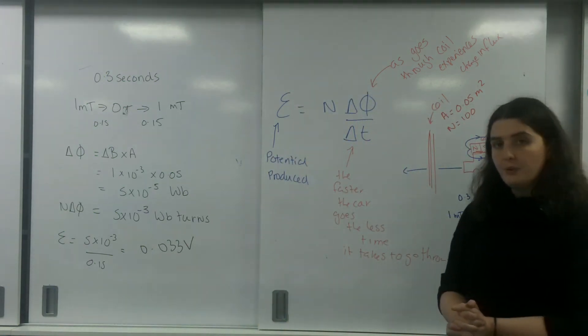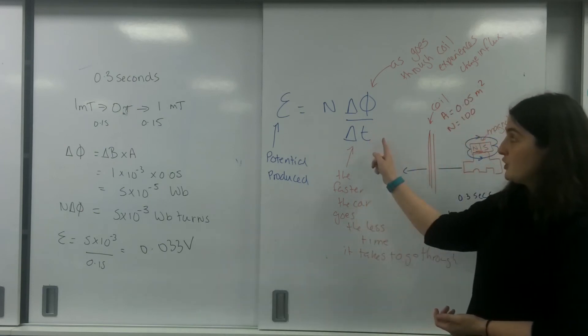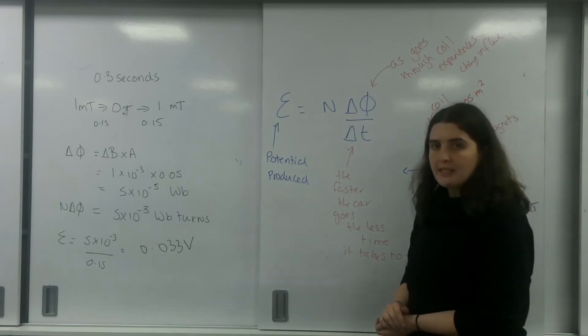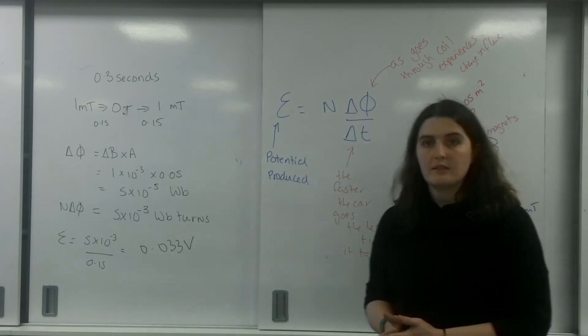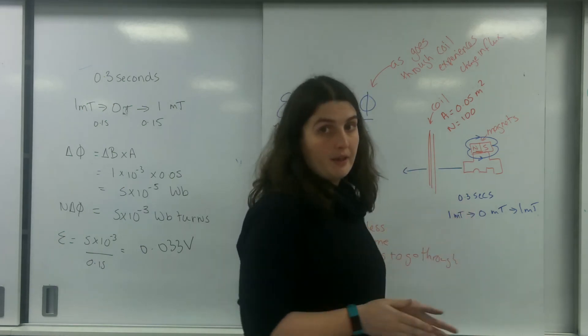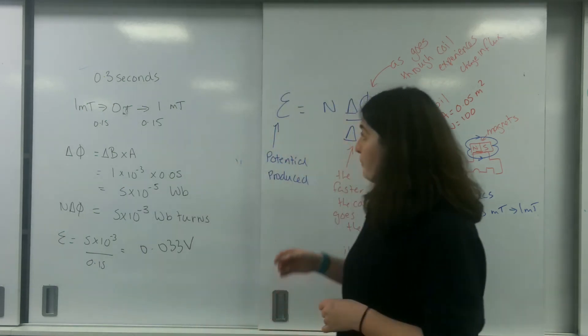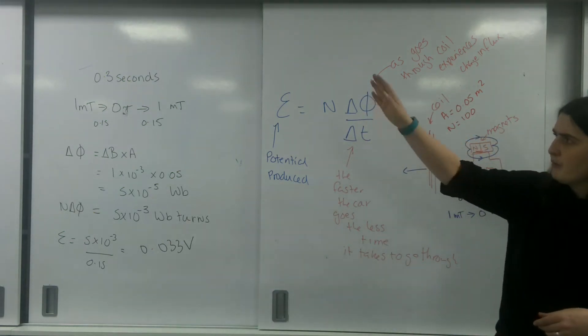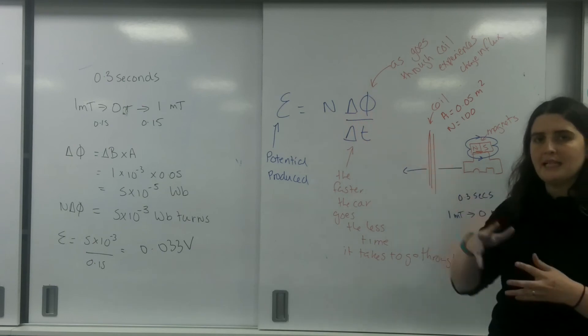Now this is really important, that for Faraday's law, which is this here, you can only use this for an object that is changing flux. So going from one flux linkage to another. So it could be, for example, like my car going through this here. So my object is going from one millitesla to naught millitesla, and then from naught millitesla to one millitesla again.